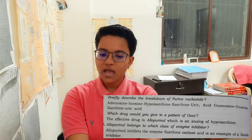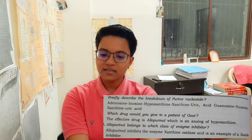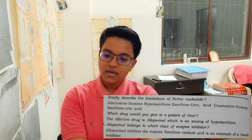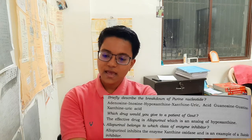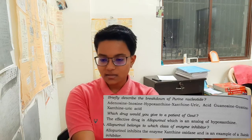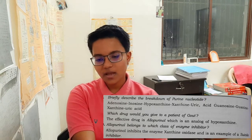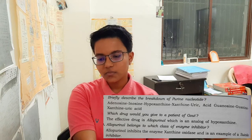The breakdown of purine nucleotides proceeds as follows: Adenosine → Inosine → Hypoxanthine → Xanthine → Uric Acid, and Guanosine → Guanine → Xanthine → Uric Acid. Xanthine oxidase catalyzes the last two steps: Hypoxanthine to Xanthine, and Xanthine to Uric Acid.